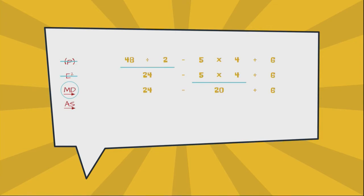Brand new problem: 24 minus 20 plus 6. All right, now we're ready to go down to addition and subtraction, left to right, left to right. Who's on the left hand side, the subtraction or the addition? Subtraction. Subtraction is on the left hand side, so we have to do 24 minus 20 first and we get 4.